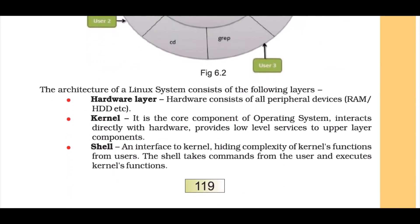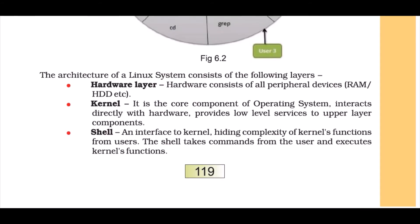In detail: Hardware consists of all peripheral devices — RAM, hard disk, etc. — everything physically present. The Kernel is the core component of the operating system that interacts directly with hardware and provides low-level services to upper layer components, translating services from the upper layer. The Shell is the interface to the kernel — it hides the complexity of kernel functions from users and converts that information back to them. The shell takes commands from the user and executes kernel functions.